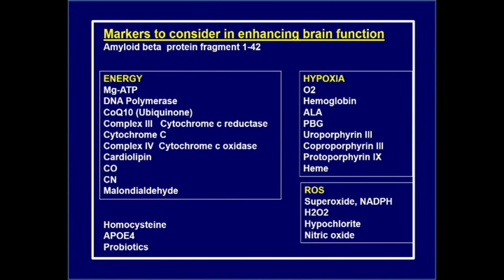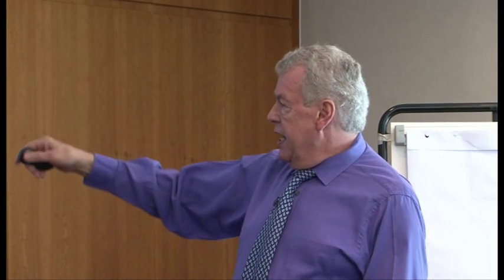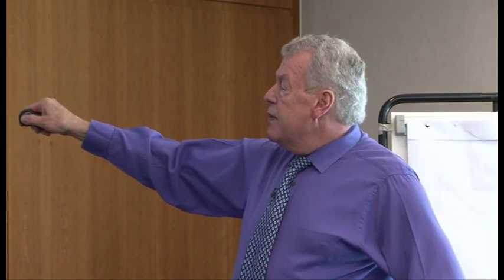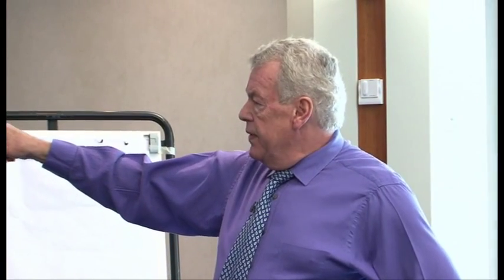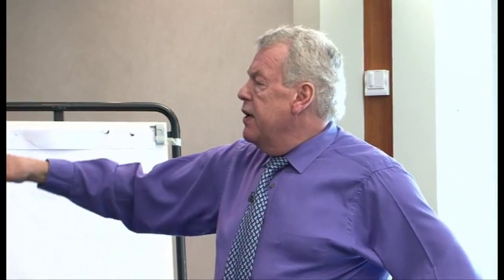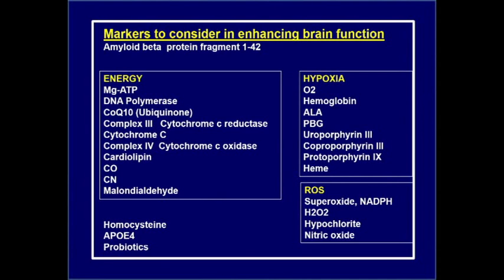We use DNA polymerase to indicate a polymorphism or damage to DNA, particularly in the mitochondria — this is a zinc-dependent enzyme. Whenever it shows, it means there is reactive oxygen species damage. CoQ10, complex 3 (cytochrome C reductase), cytochrome C — which takes electrons from complex 3 to 4 — and complex 4, otherwise known as cytochrome C oxidase, where free radicals are generated inside the mitochondria. Cardiolipin is the phospholipid rich in the mitochondrial membrane. Carbon monoxide and cyanide at complex 4, and oxidative damage to phospholipid structures with malondialdehyde — these are our major markers on the energy side.